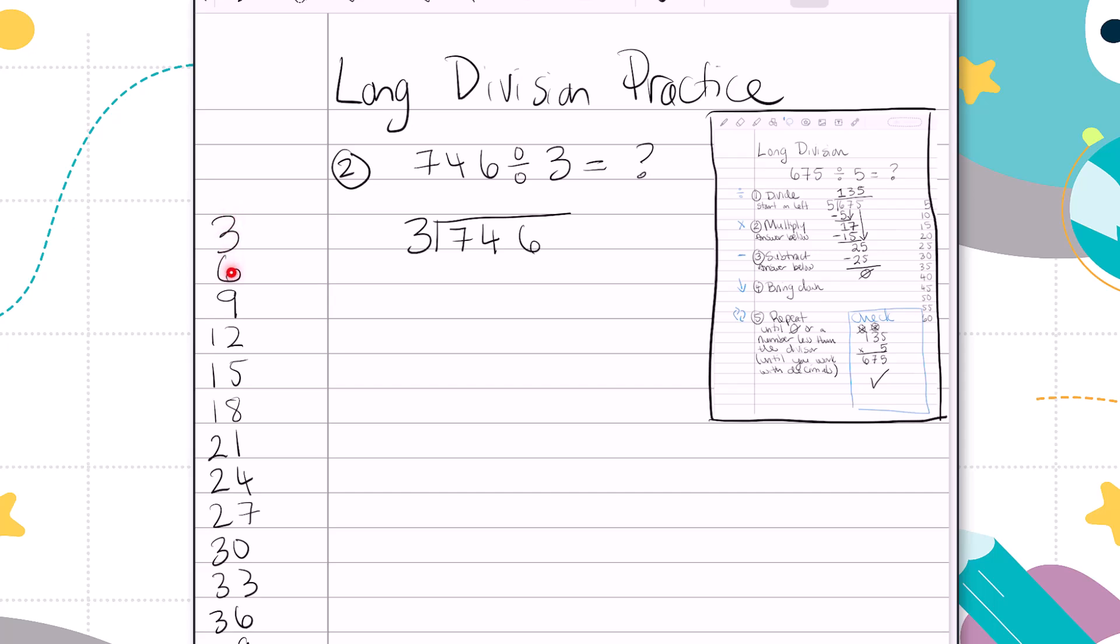First I'm going to divide. I'm going to start in the hundreds place all the way over on the left. And I'm going to look how close I can get to 7 without going over. 2 times. 2 times 3 is 6. 7 minus 6 is 1. And then bring down the next digit. 14. Going to see how many times I can divide 14 by 3. The highest I could get is 4. 4 times 3 is 12. 14 minus 12 is 2. Then I'm going to bring down that last digit.